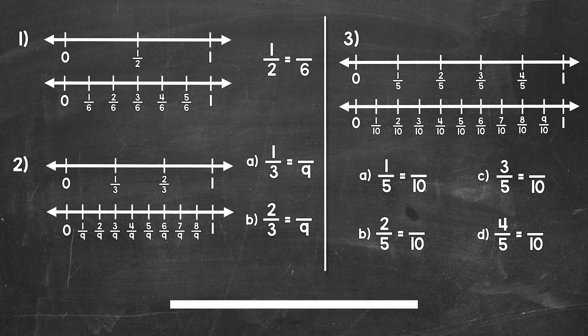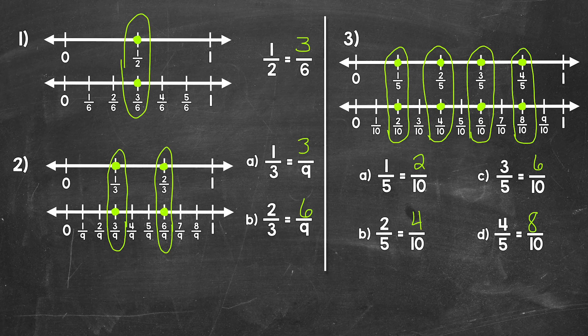Okay, so that's two minutes. Let's go over the answers. For number 1, one-half is equivalent to three-sixths. For number 2, part A: one-third is equivalent to three-ninths. For part B: two-thirds is equivalent to six-ninths.